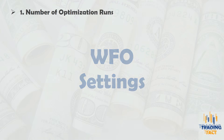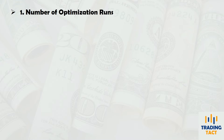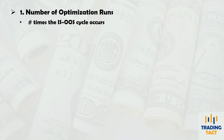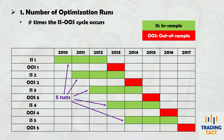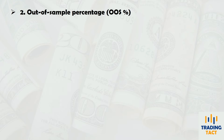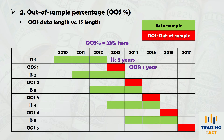There are two key settings when setting up a walk-forward optimization. First is the number of optimization runs — this is the number of times each in-sample optimization and out-of-sample testing cycle is done; there are 5 runs in the illustration here. The next is your out-of-sample percentage: for each run, this is the out-of-sample data length in comparison to the in-sample length. A 33% out-of-sample percent is used here.